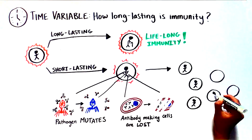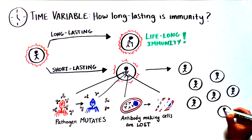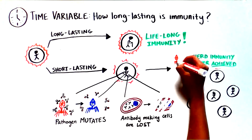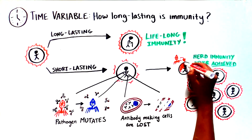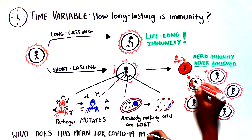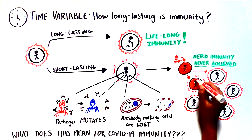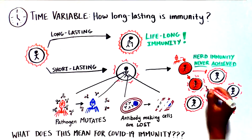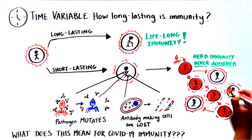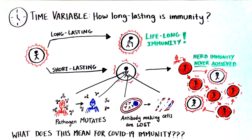Short-lived immunity means that in some cases, herd immunity cannot be achieved because there is always a large proportion of the population that is susceptible. For COVID-19, we don't know yet, as we are still trying to understand how long natural immunity to SARS-CoV-2 lasts, and whether we can elicit long-term immunity with a SARS-CoV-2 vaccine. Long-term immunity is key to determining if herd immunity will be protective for COVID-19.